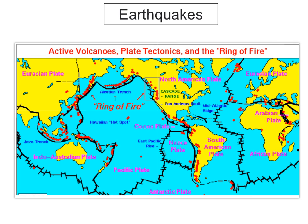Earthquakes happen at destructive plate boundaries when the plates are crashing against each other and one is subducting under the other, or along conservative or transform plate boundaries. This is when two plates are rubbing side by side or moving in different directions. The most famous example is the San Andreas Fault.